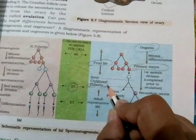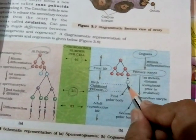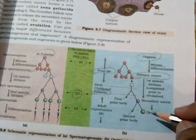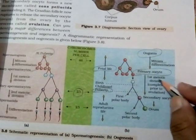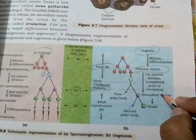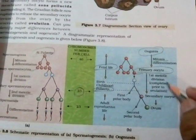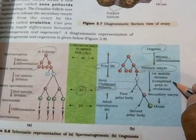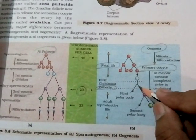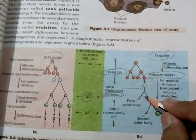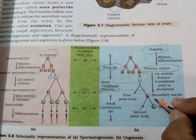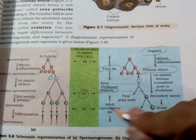At the time of puberty in the female body, the primary oocytes begin to mature and ovary formation starts. The first meiotic division is completed prior to ovulation. Through this division, the primary oocyte forms a first polar body and a secondary oocyte.